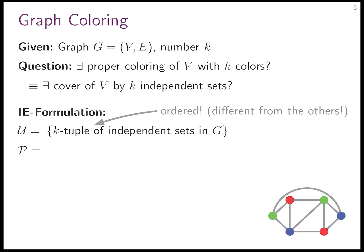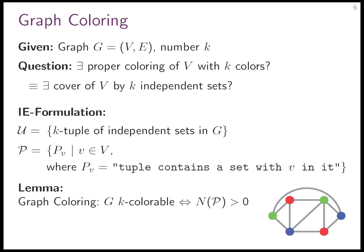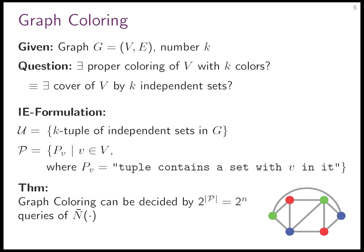The properties are: for each vertex, it has to be in one of the independent sets in the tuple. The claim is that G is k-colorable if and only if N(P) is strictly larger than zero. Using inclusion-exclusion, we can calculate N(P) using 2^n evaluations of N̄. This leads to the theorem: graph coloring can be decided by 2^|P| = 2^n queries of N̄.